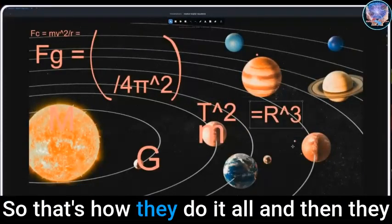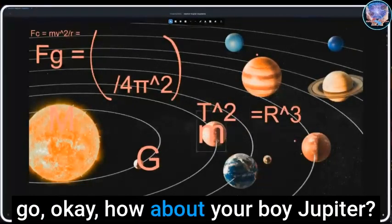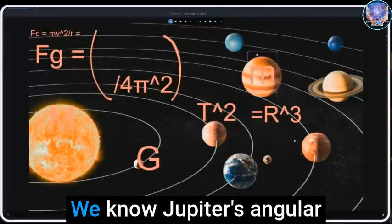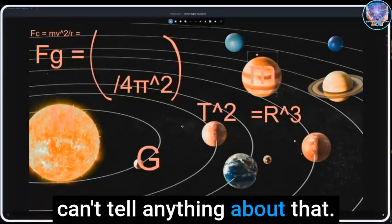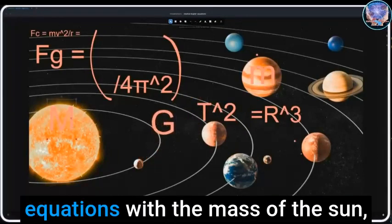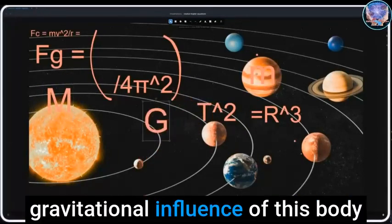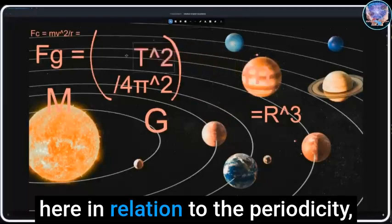Okay, the period is in Mars as it goes around. It completed its thing and then now it's proportional to this distance right here. So that's how they do it all. And then they go, okay, how about your boy Jupiter? Now we know Jupiter's angular size and all that, but you can't tell anything about that.